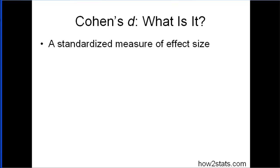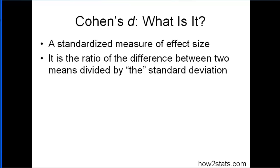So Cohen's D, what is it? It's a standardized measure of effect size. Another way to say it is it's the ratio of the difference between two means divided by the quote-unquote standard deviation.